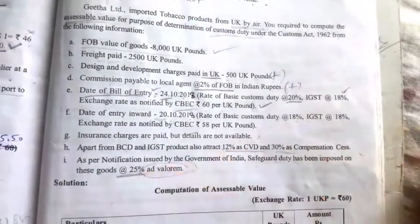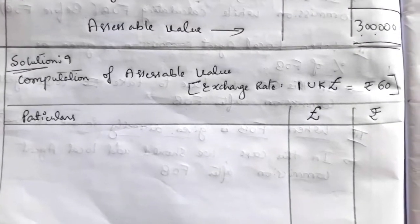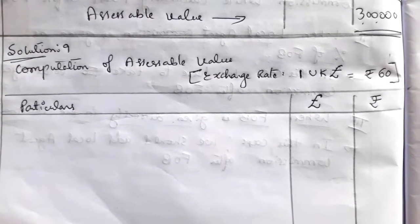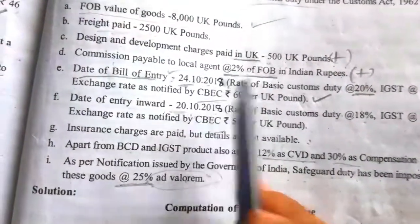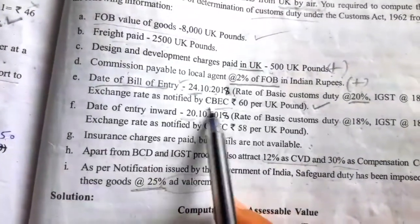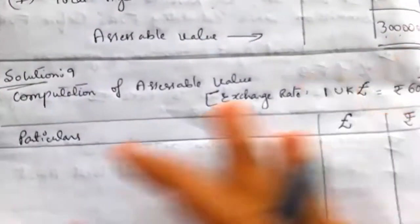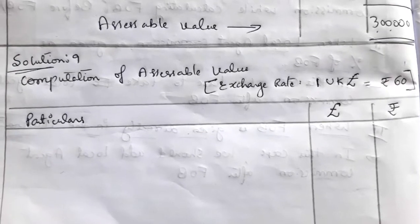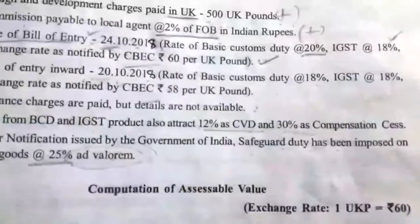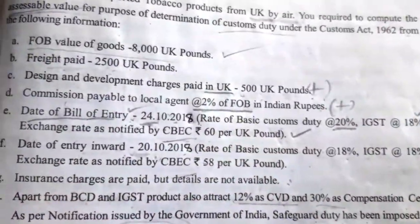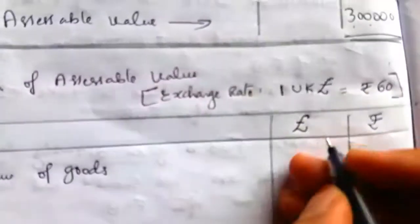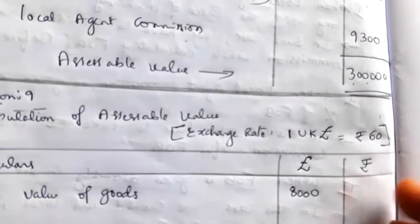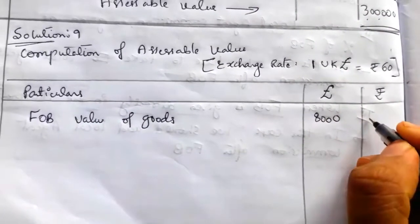Now we will work out the solution. Write the heading: Solution number 9, Computation of Assessable Value. The exchange rate to consider is 1 UK pound = Rs. 60, as we take the latest date, 24-10-2018, and the exchange rate notified by CBEC is Rs. 60 per UK pound. Draw 3 columns: particulars and 2 amount columns — pounds and rupees. FOB value of goods is 8,000 UK pounds; converting: 8,000 × 60 = Rs. 4,80,000.